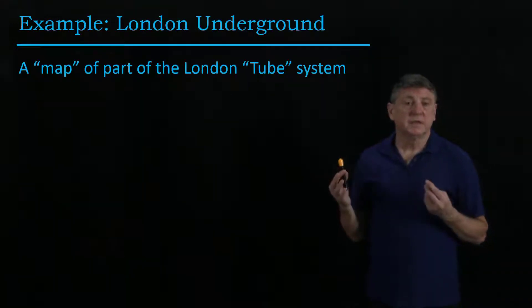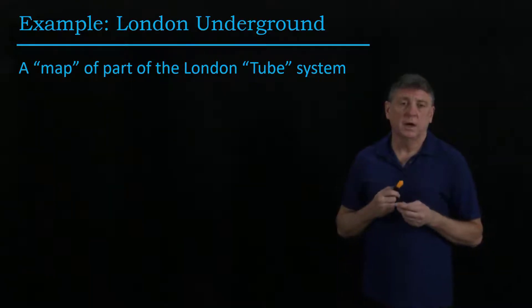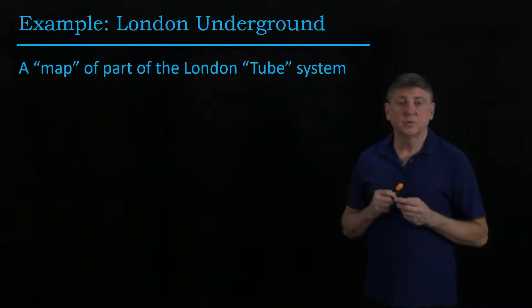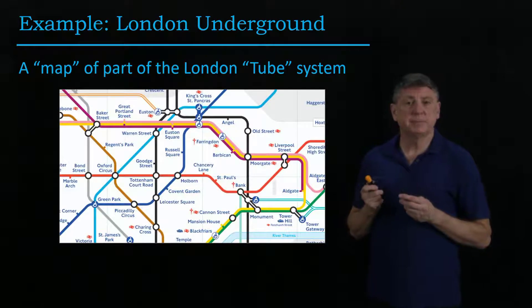An example is in London, England. They have a very famous, very old underground rail system that's often referred to as the tube, and the map of this is widely known. This is an example of part of the downtown map for the London Underground.